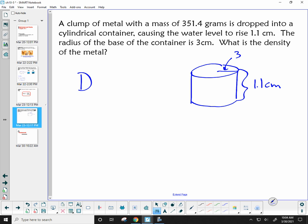Formula-wise, density equals mass over volume. We're solving for density. The mass they gave us is 351.4 grams. Now we need to find the volume. Volume of the cylinder is the base times the height. So my base is a circle, right? Pi r squared.